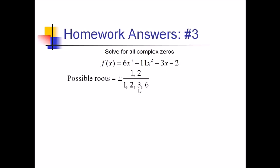So now, we've got combinations of these. We have 1 and 2 over 1, which is just 1 and 2. We have 1 half, 2 over 2 is just 1. We have 1 third, 2 thirds. We have 1 sixth, and 2 over 6 is just 1 third. So, these are all the unique roots that we have here if we reduce things.